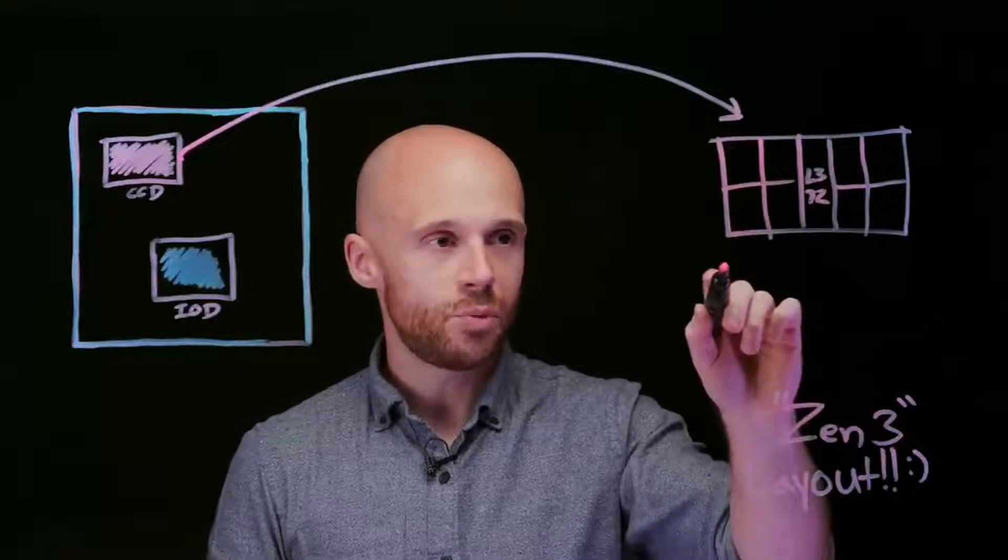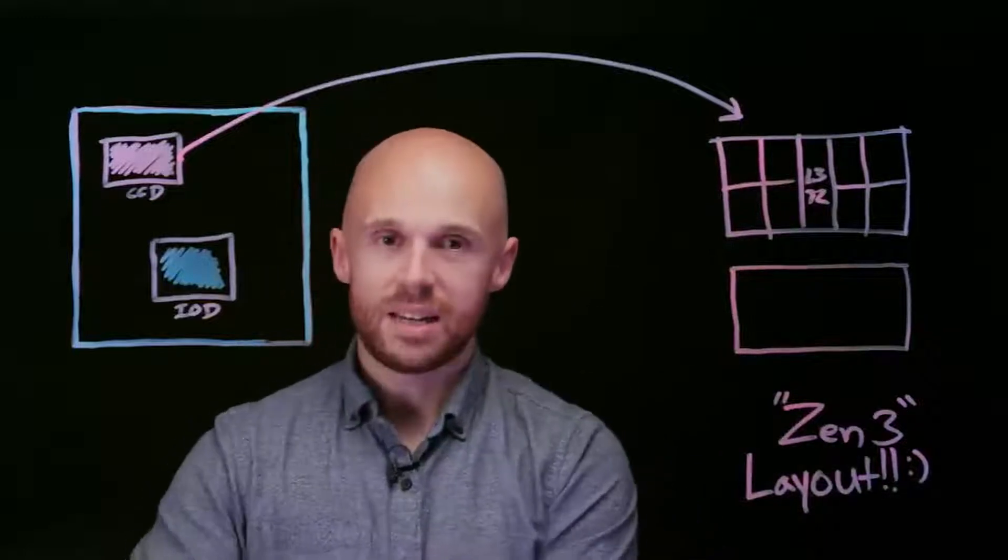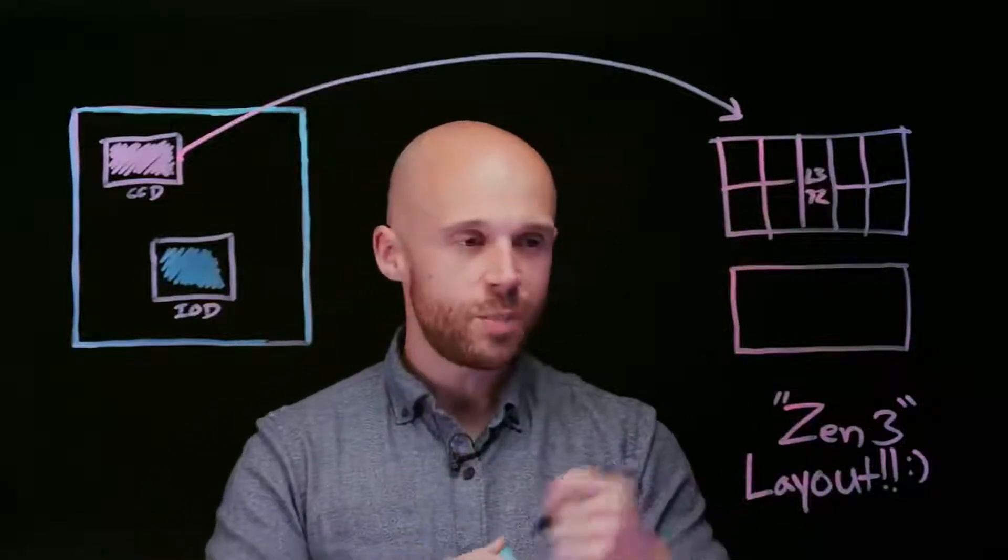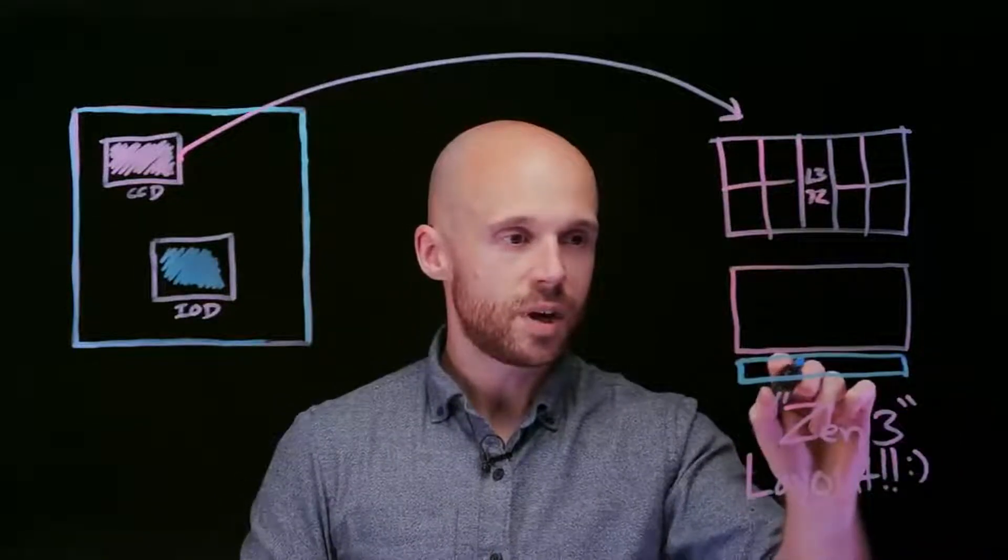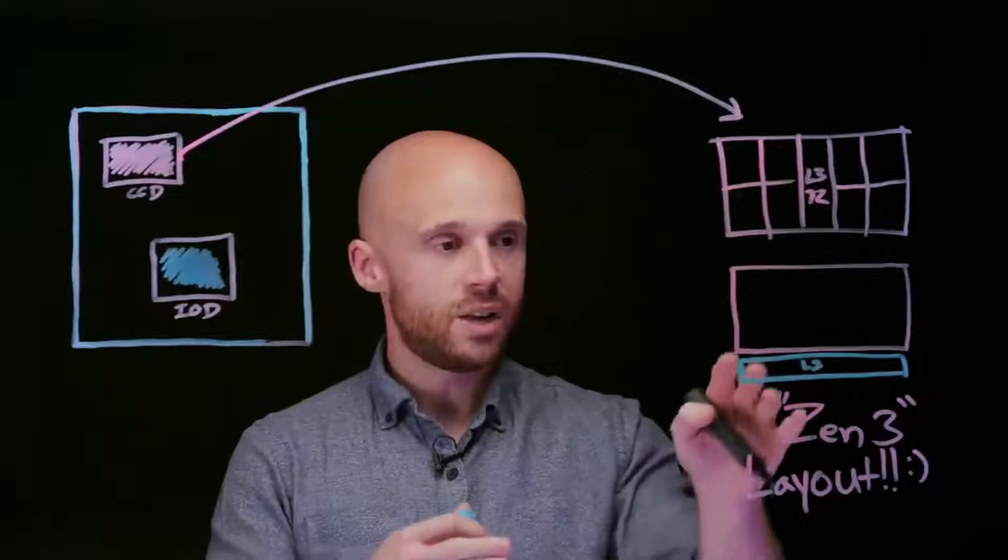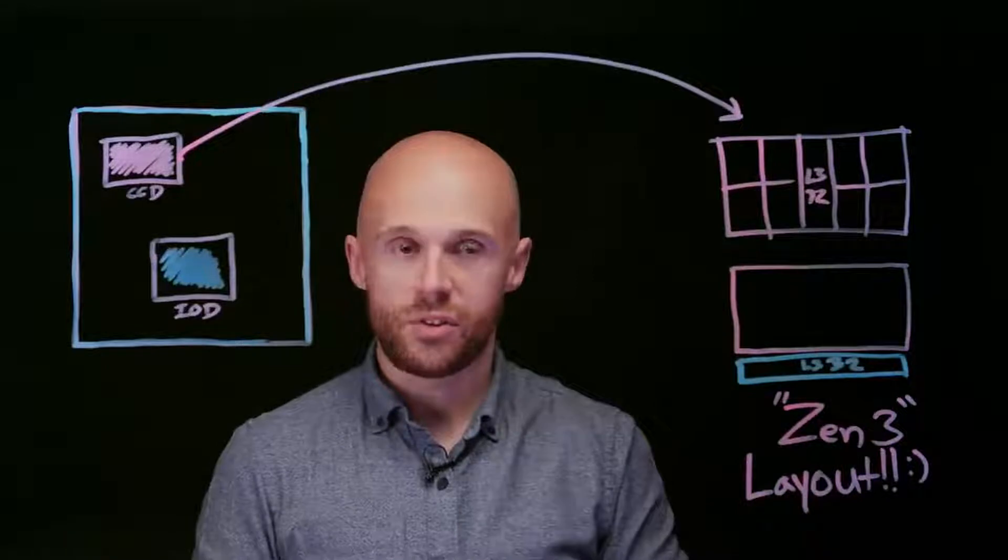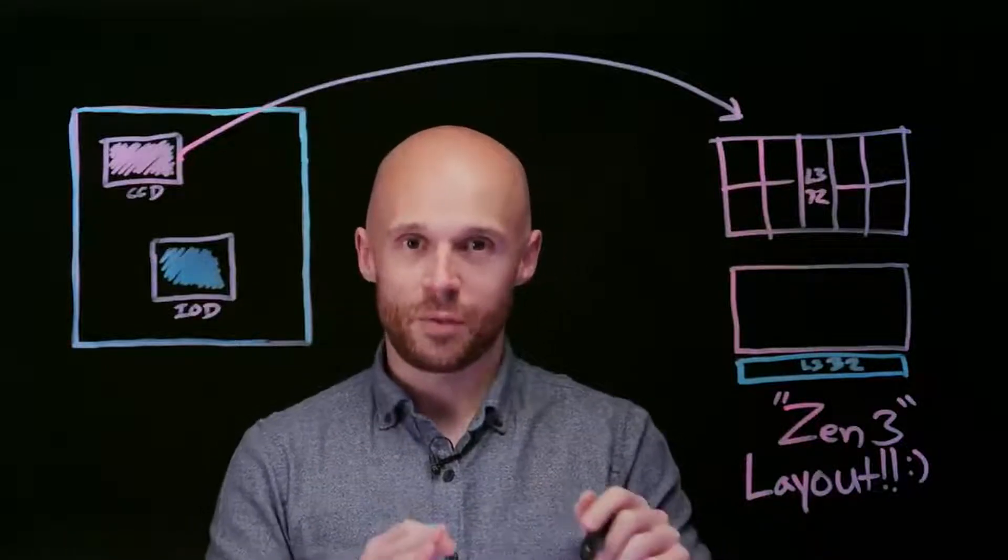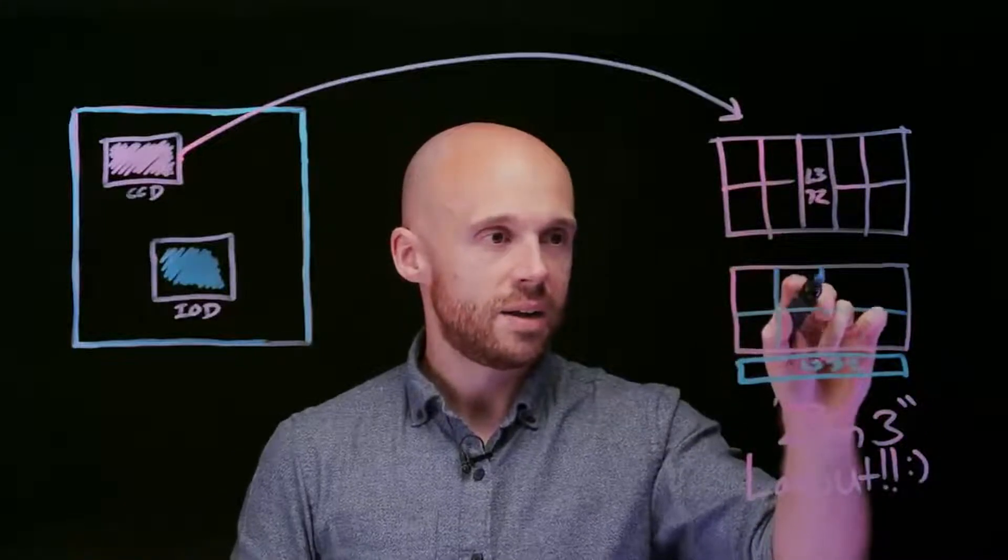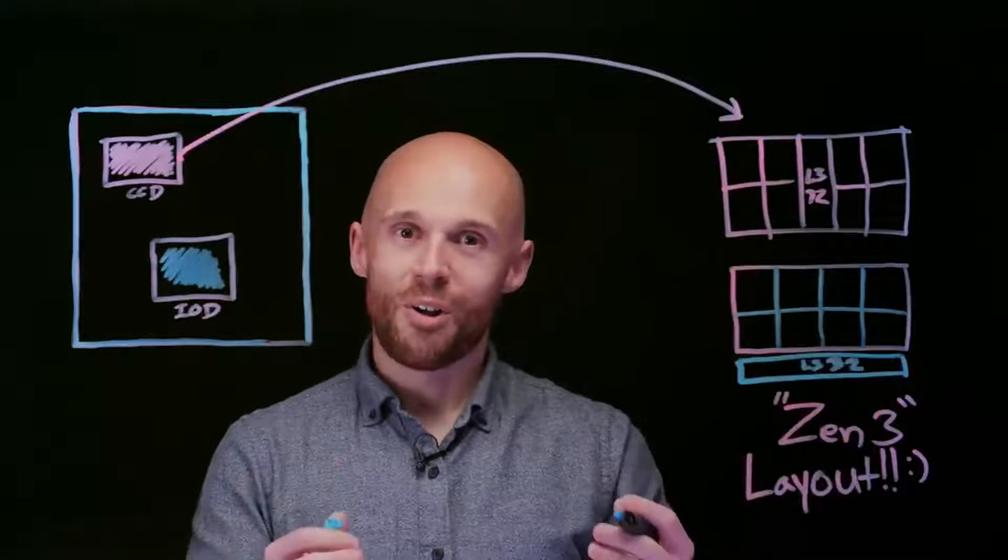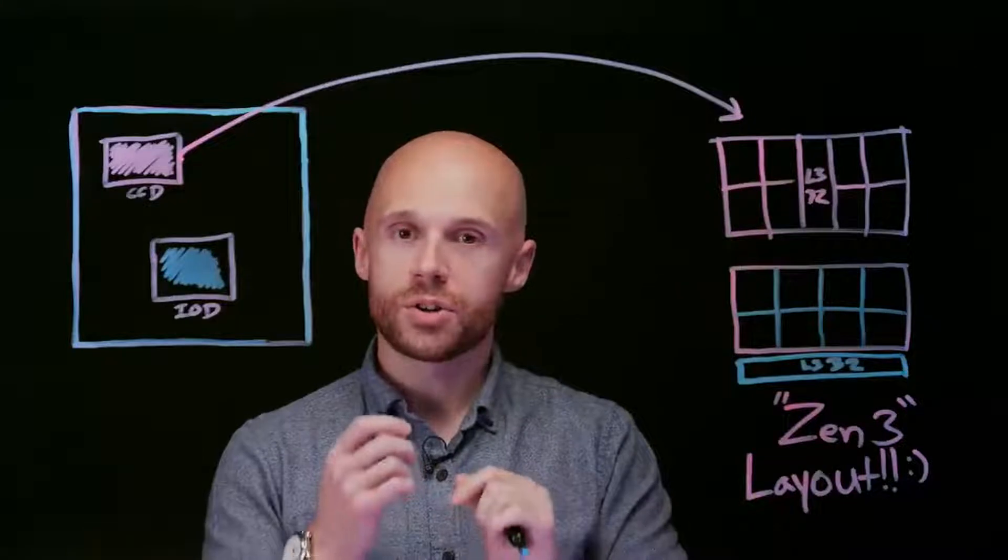So let's put Zen 3 on the board. And it looks a little bit different. And this isn't exactly how the chip is laid out in real life, but it helps to draw it this way, just so you can see what's going on. So we're going to put L3 there again. We've got also 32 megs of L3, just like Zen 2. But here is the big difference. How the cores are laid out. We've got still eight cores, but they're all together. All eight cores are in one single large block.